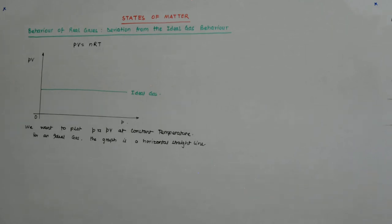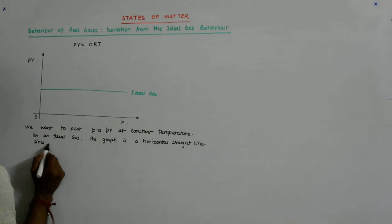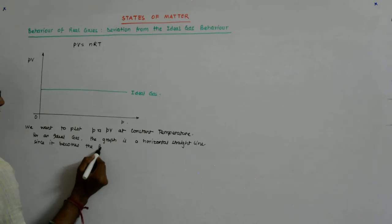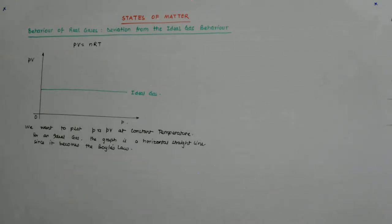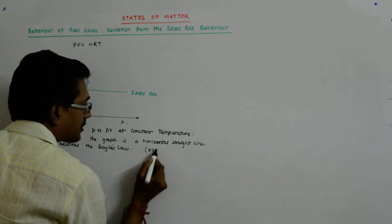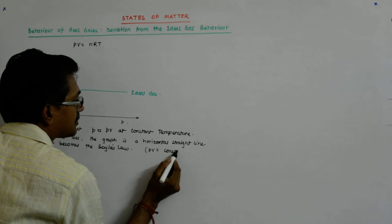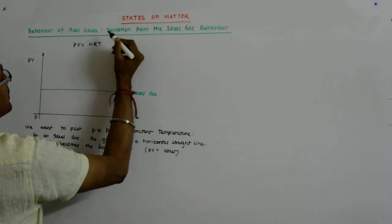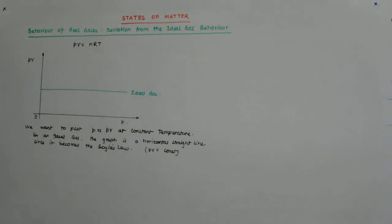It should be, since it becomes Boyle's law. PV is equal to constant. Why? Because T is a constant, R is the universal constant, and we are dealing with a fixed amount of gas.